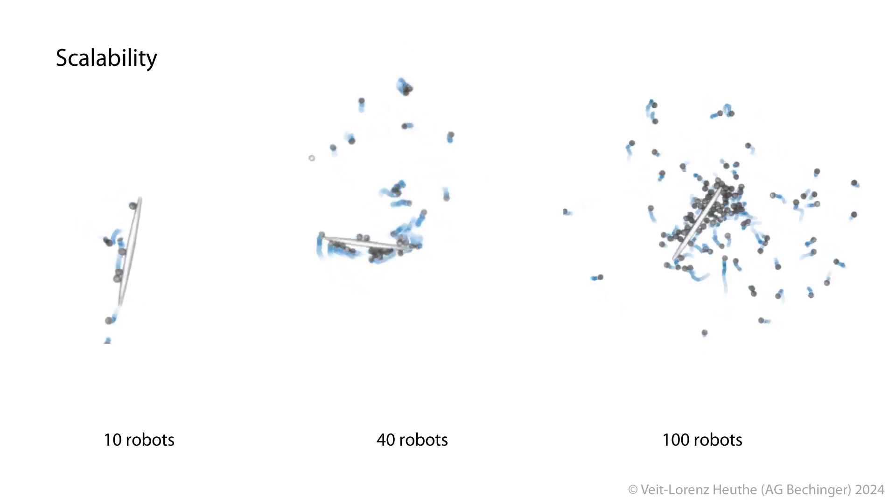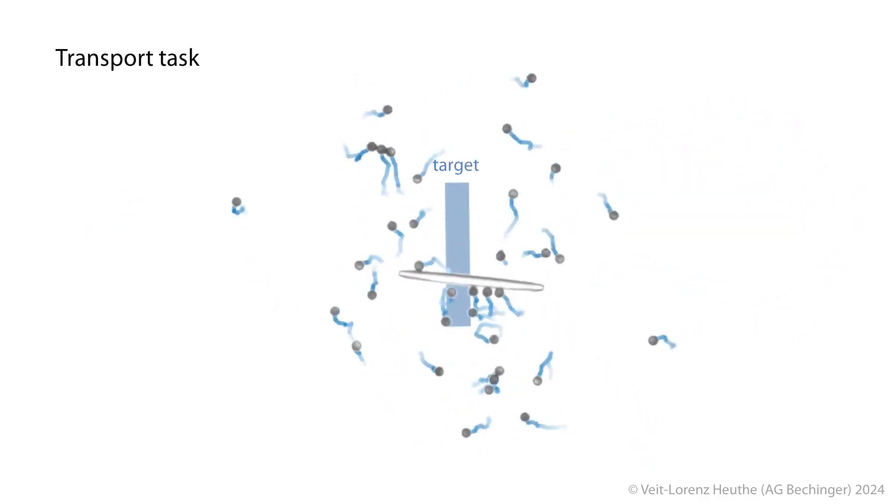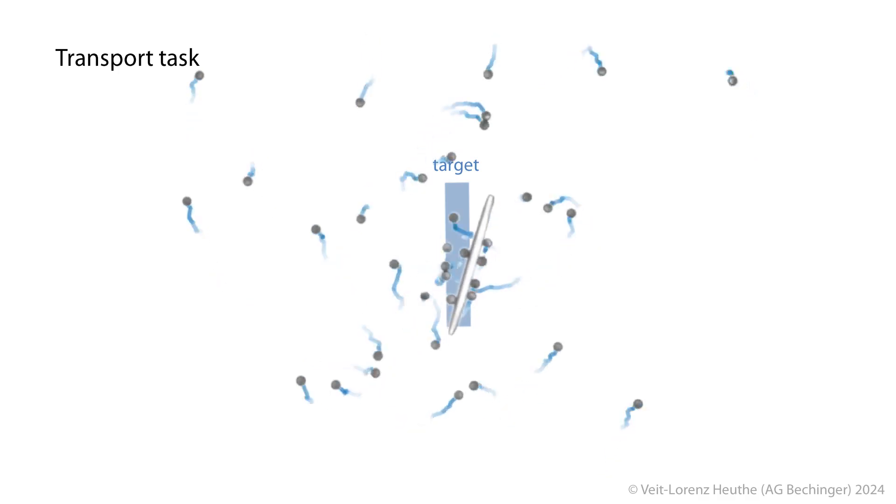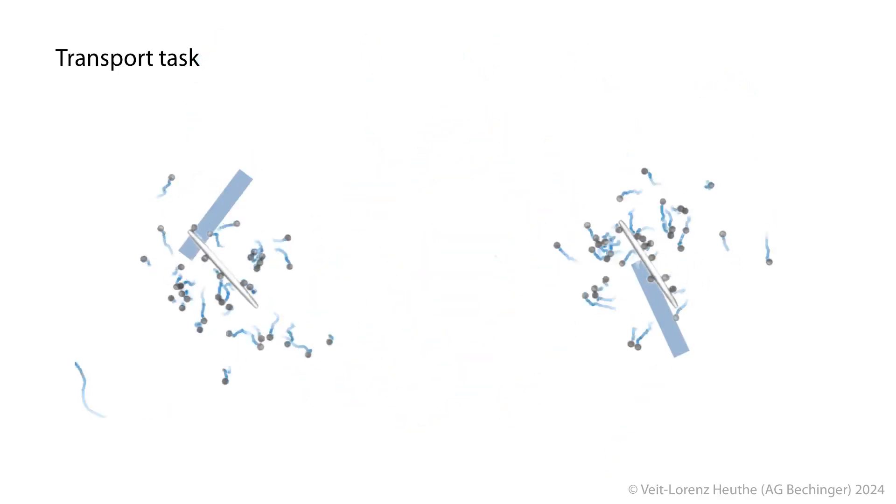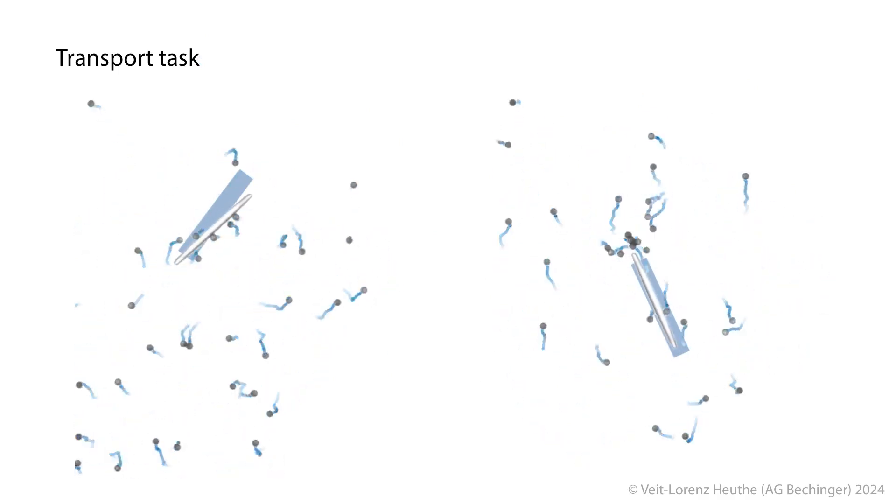But the real advantage comes with the ability of the swarm to perform different tasks, like transporting the rod to a predefined location. For transporting the rod, the micro-robot swarm needs to control the position of the rod too, which makes this task especially challenging.